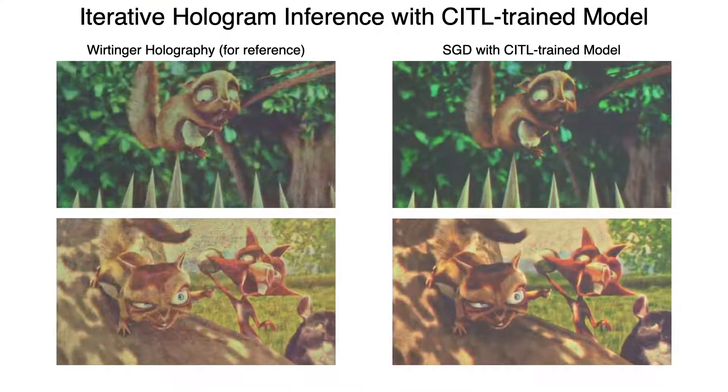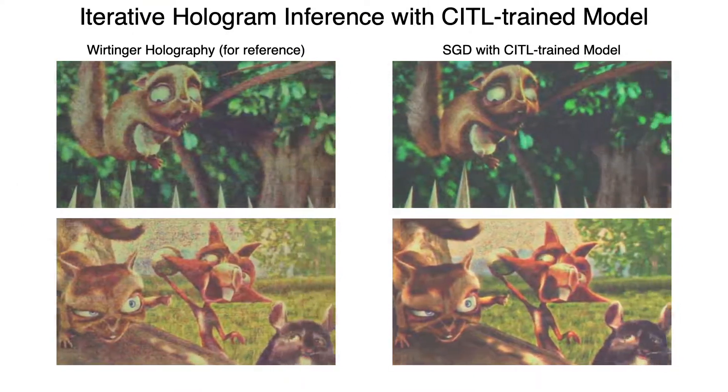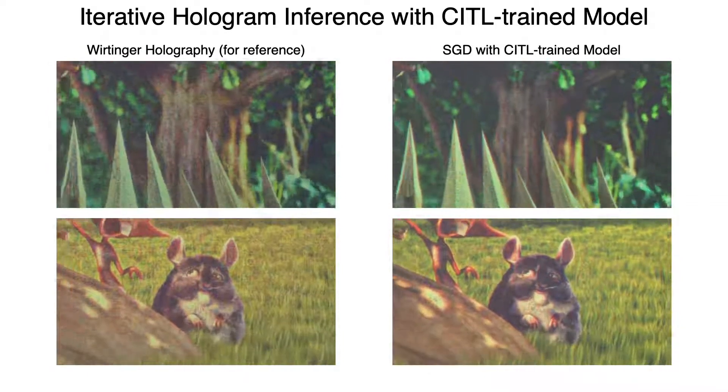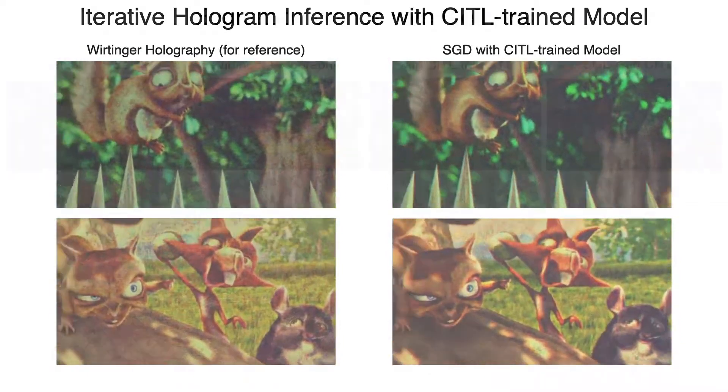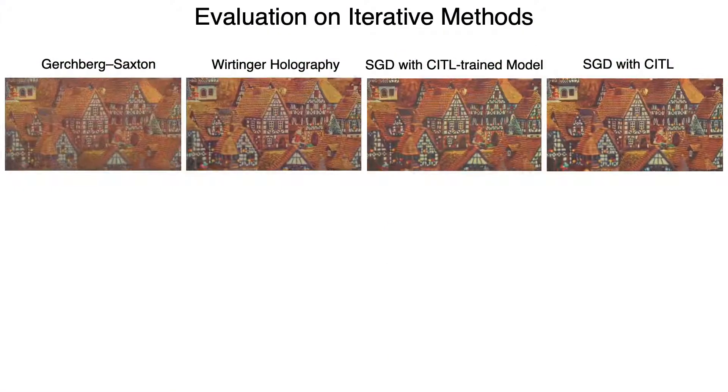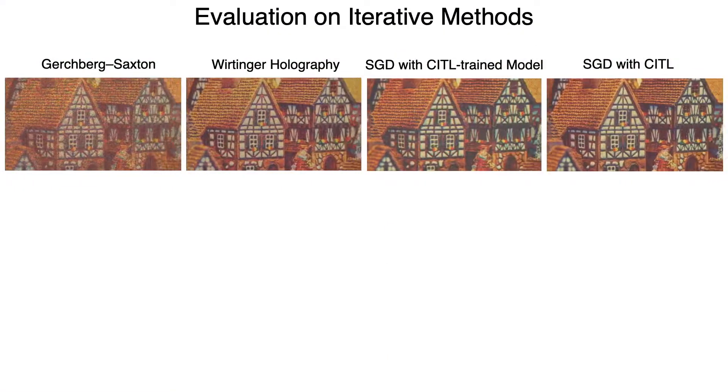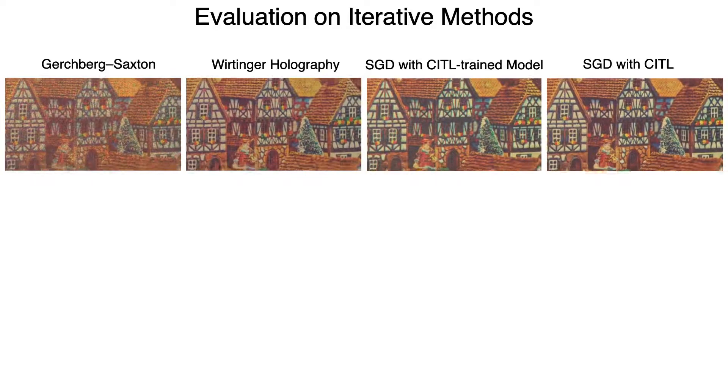As seen in this example, this camera-trained model achieves better image quality than the state-of-the-art CGH algorithms. Here is another example that compares iterative CGH algorithms. Our camera-in-the-loop procedures achieve the best quality.